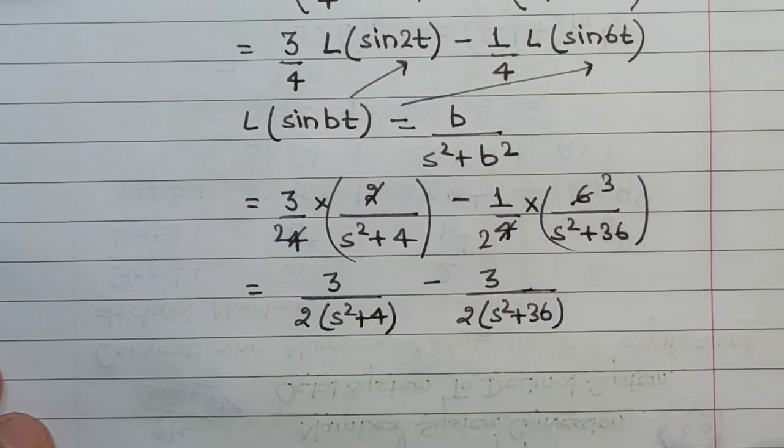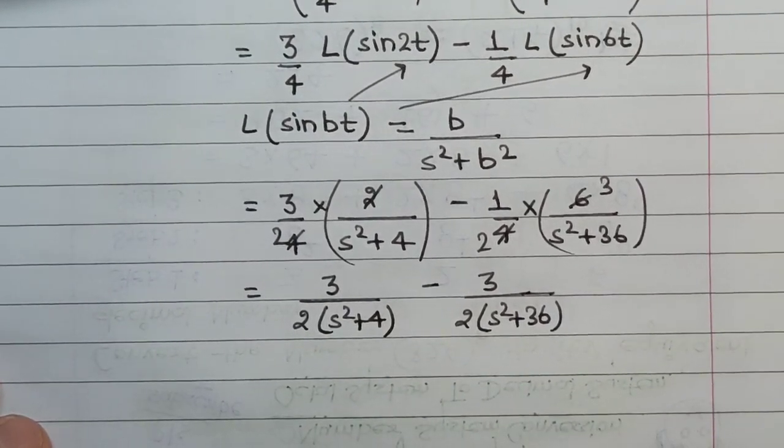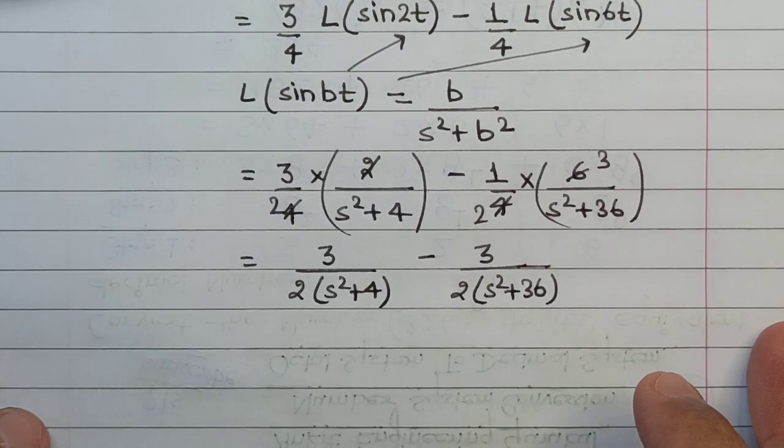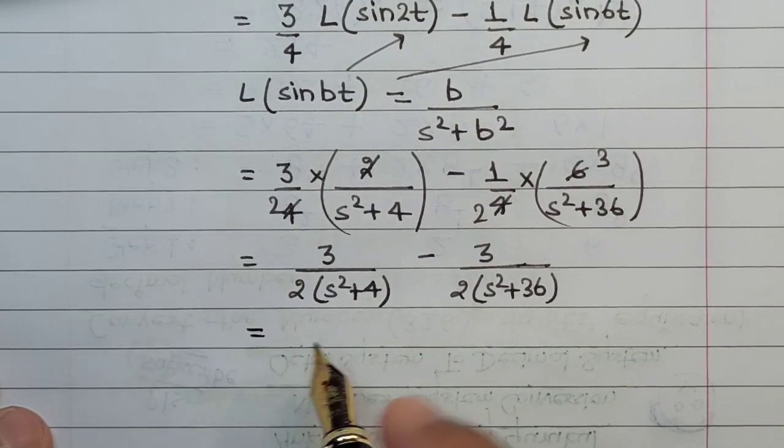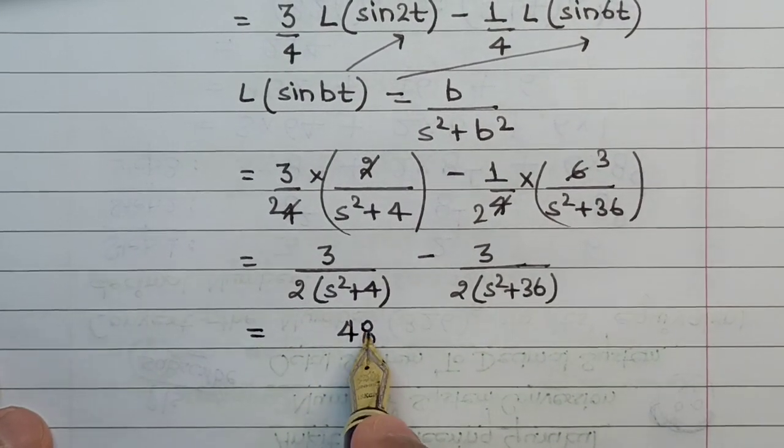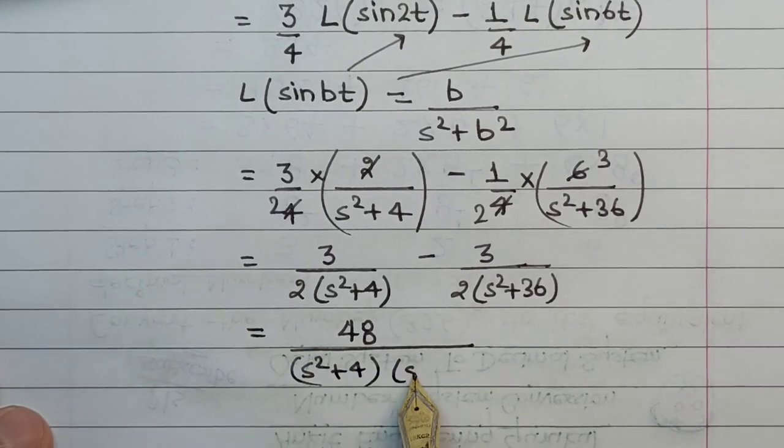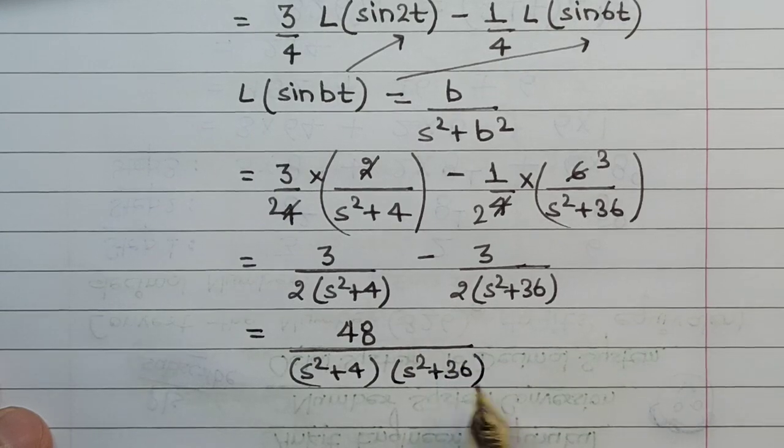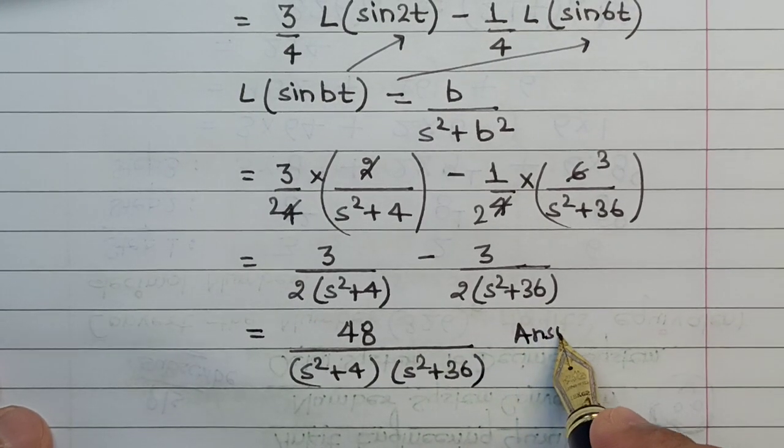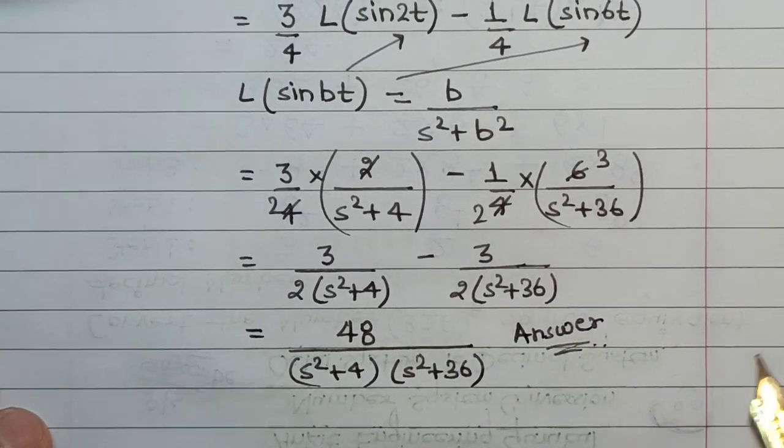In the next step if you want you can either take the LCM or leave this question as such. However, if you take the LCM then the final answer that you will get is 48 whole divided by s square plus 4 multiplied by s square plus 36. This my friend right here is the final answer to this particular problem.